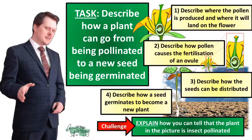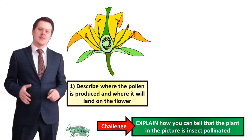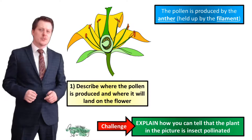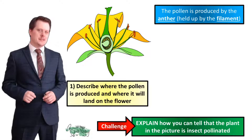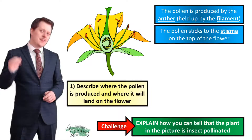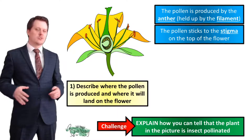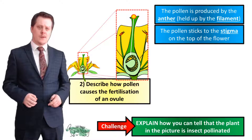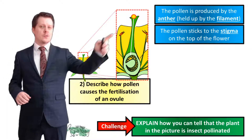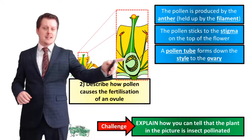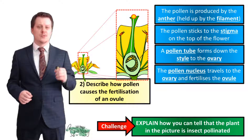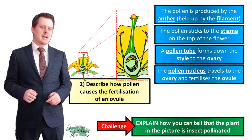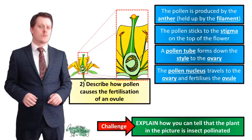Starting with number one — describing where the pollen is produced and where it will land on the flower. The pollen is produced by the anther, which is held up by the filament. When this plant is pollinated that pollen will stick to the stigma on top of the flower. For number two, describing how pollen causes the fertilization of an ovule: our pollen tube forms from the stigma down the style and into the ovary, allowing the pollen nucleus to travel to the ovary and fertilize an ovule.